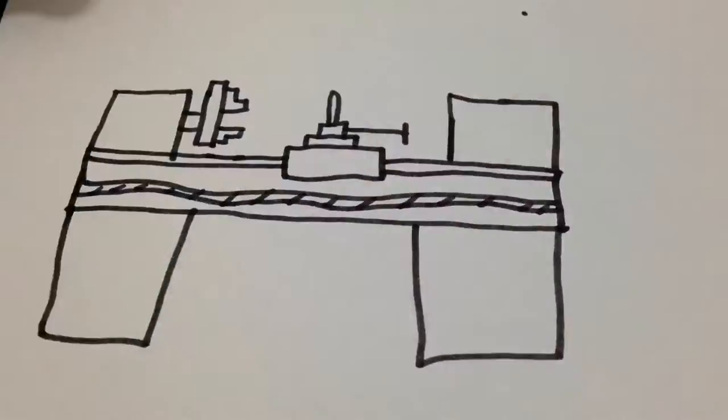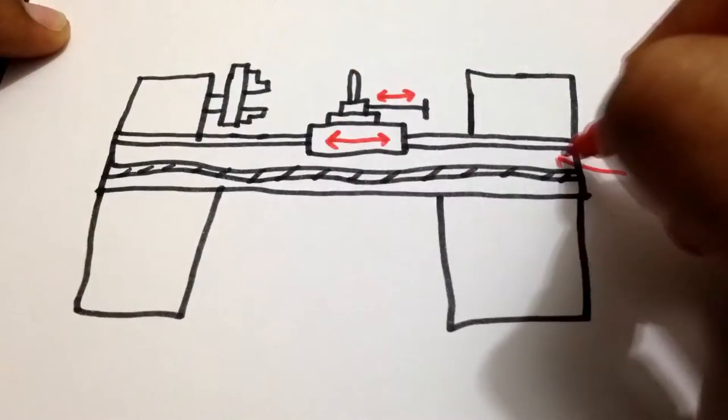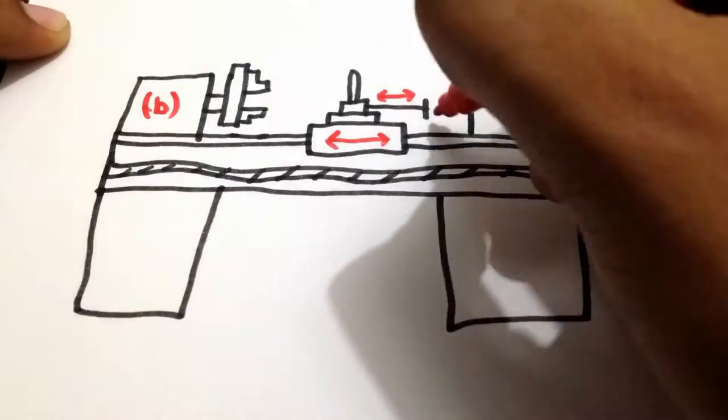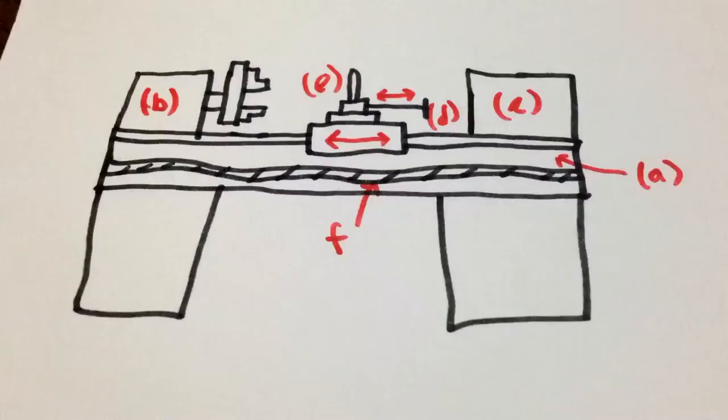A lathe machine generally includes the following parts: Bed, Headstock, Trailer, Carriage, Feed mechanism, and Credit cutting mechanism.